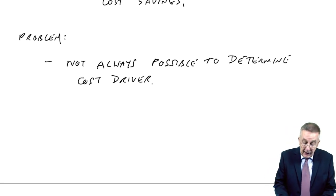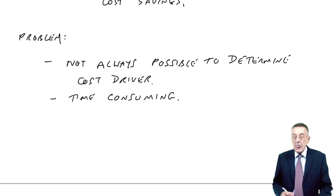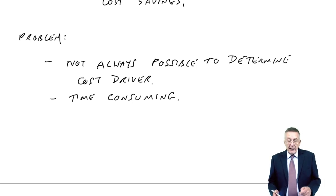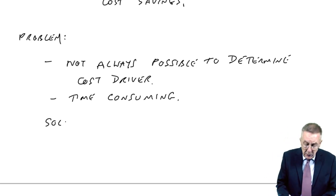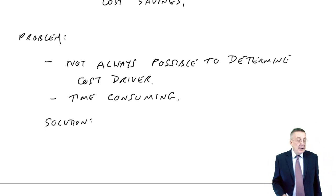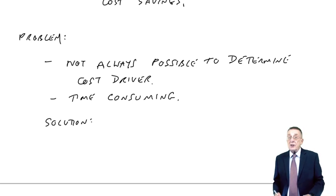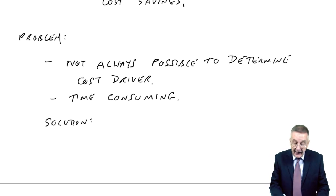And the exercise can be time consuming, looking for cost drivers. And so, what tends to happen in real life, the sort of practical solution to that, is to go through the overheads, and where there is an obvious cost driver, like there were for each of the four in our question, then use activity based.